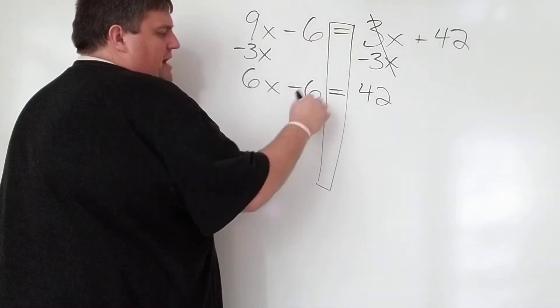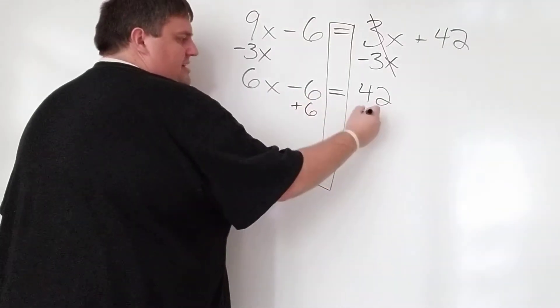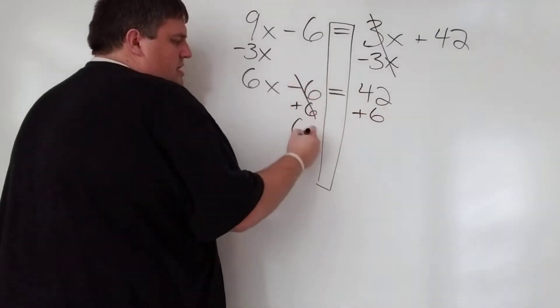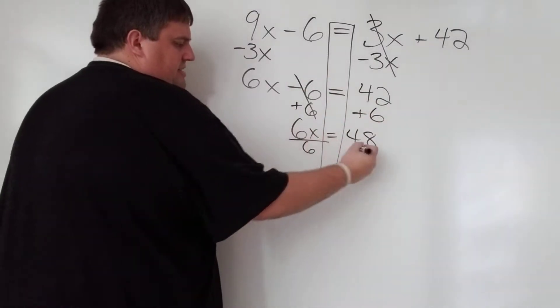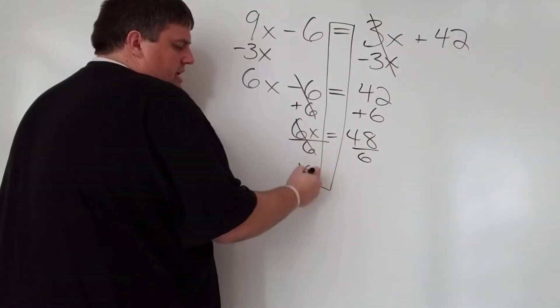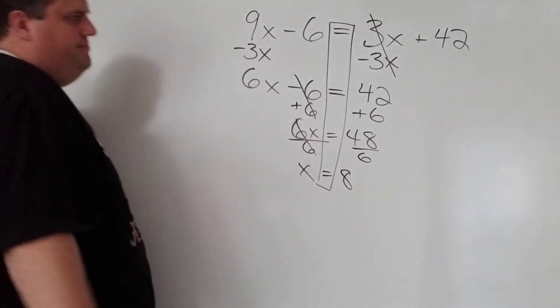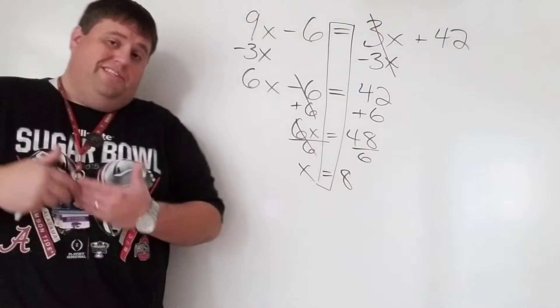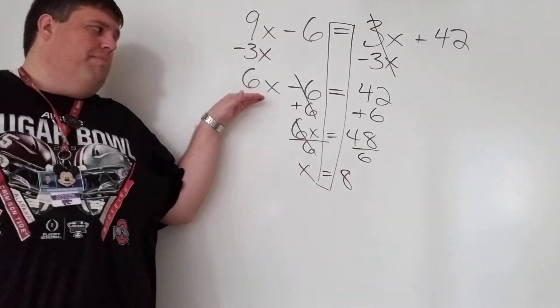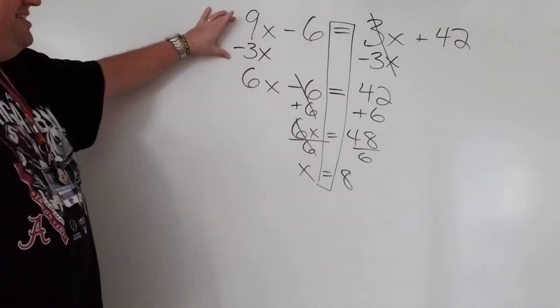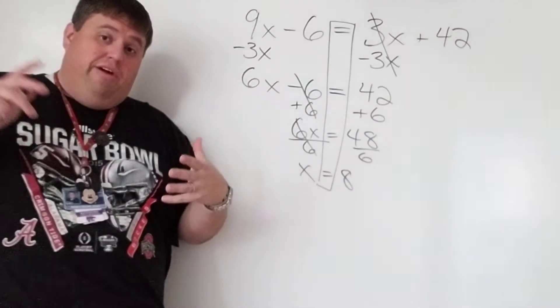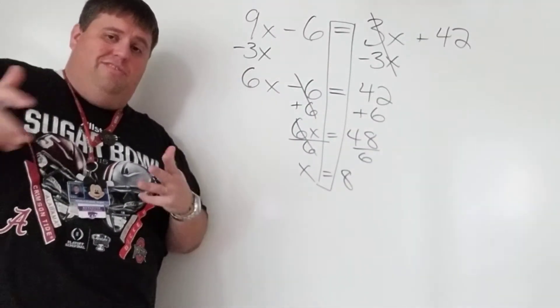So here's x. We're going to get rid of minus 6. We're going to add 6. 6x equals 48. And then divide by 6. And we get x equals 8. So just like before, we got to a two-step equation. This stuff we already know how to do. It's really just this step right here where I'm going to get rid of one of those variables by adding or subtracting.